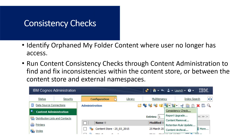Another thing you'll want to do is run consistency checks. This identifies what we call orphaned My Folder content where a user no longer has access. For example, a user left the company a couple of years ago and had content in their My Folders. When you remove them from Active Directory, they can no longer access Cognos, but their content is still sitting there — orphaned. You can run a content consistency check through content administration to find and fix inconsistencies between the content store and external namespaces.